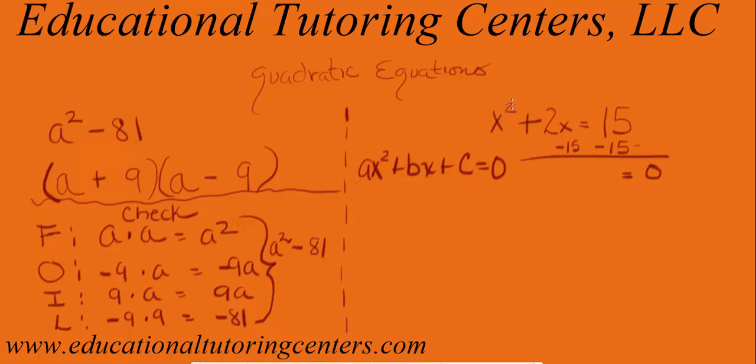15 minus 15 will give you 0. And then here, there are no other X squared terms. There are no other X terms. And there are no other constant terms here on the left. So we just simply write them in the format, like here. So X squared plus 2X minus 15.